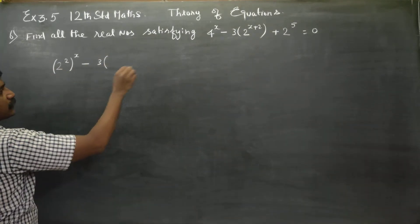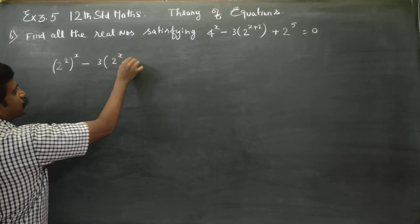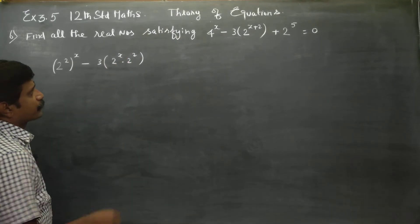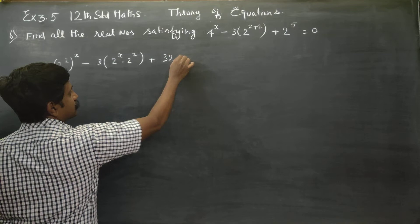Minus 3 times 2^x can be written as 2^x times 2^2. 2^5 is 32, equals 0.